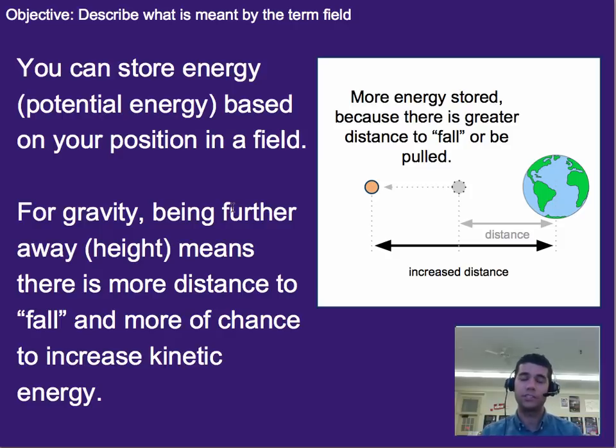So one last thing with this is because there is this field, this force, you can actually store energy. And we've already talked about gravitational potential energy. In this case, if Earth has gravity, if you pull something further away, there's more room for that field to act on this guy, which means there's more room for it to speed up or increase its kinetic energy. So by increasing distance away from the source, we actually are increasing the amount of energy stored. And that's true for attractive forces or fields where it's an attractive pull rather than a repelling or push away.